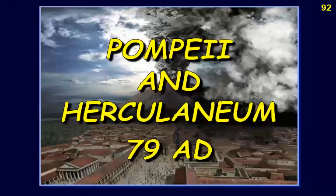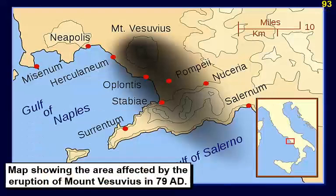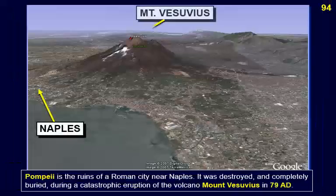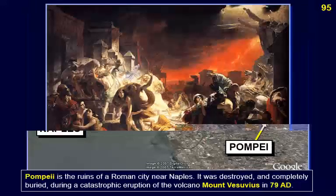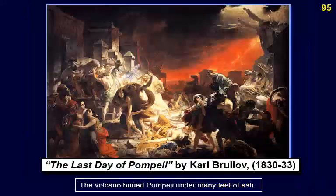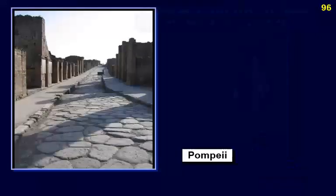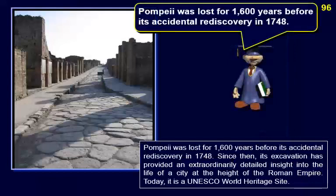Pompeii and Herculaneum. This is a map showing the cities and towns affected by the eruption of Mount Vesuvius in 79 AD. Pompeii is the ruins of a Roman city near Naples. It was destroyed and completely buried during a catastrophic eruption of Mount Vesuvius in 79 AD, which buried Pompeii under many feet of ash. Pompeii was lost for 1,600 years before its accidental rediscovery in 1748.